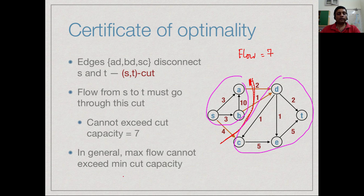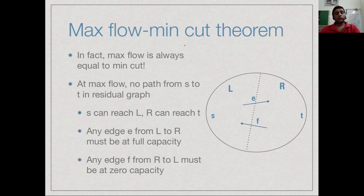In general, a cut is any set of edges that disconnects s from t, and the minimum cut is the cut with the smallest total capacity. The maximum flow cannot exceed the minimum cut because all flow must cross it. Surprisingly, the max-flow min-cut theorem states that the maximum flow always equals the minimum cut.